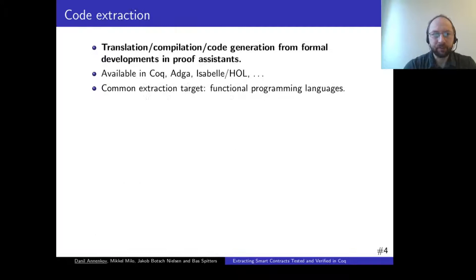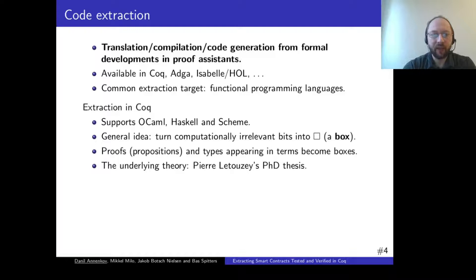There is an answer for this question: it is code extraction. Code extraction is a term that seems to be a bit Coq specific, but in general it is some kind of translation or code generation from formal developments in proof assistants. It commonly targets functional programming languages — specifically, Coq extraction supports OCaml, Haskell and Scheme. The general idea is to find and identify all the bits that don't contribute to computation and turn them into a box, so proofs given by propositions and types appearing in terms become boxes.